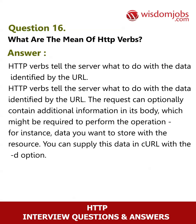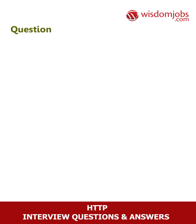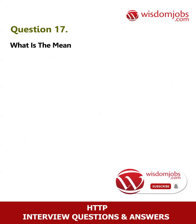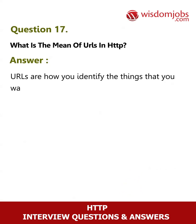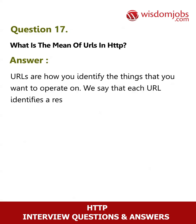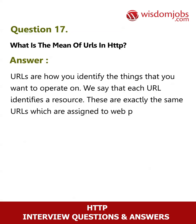You can supply this data in curl with the -d option. Question 17: What is the meaning of URLs in HTTP? Answer: URLs are how you identify the things that you want to operate on. Each URL identifies a resource — these are exactly the same URLs assigned to web pages. In fact, a web page is a type of resource.